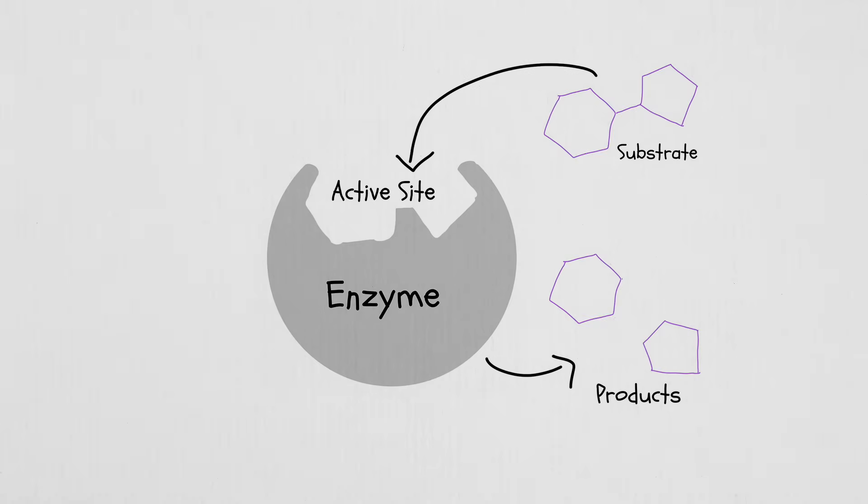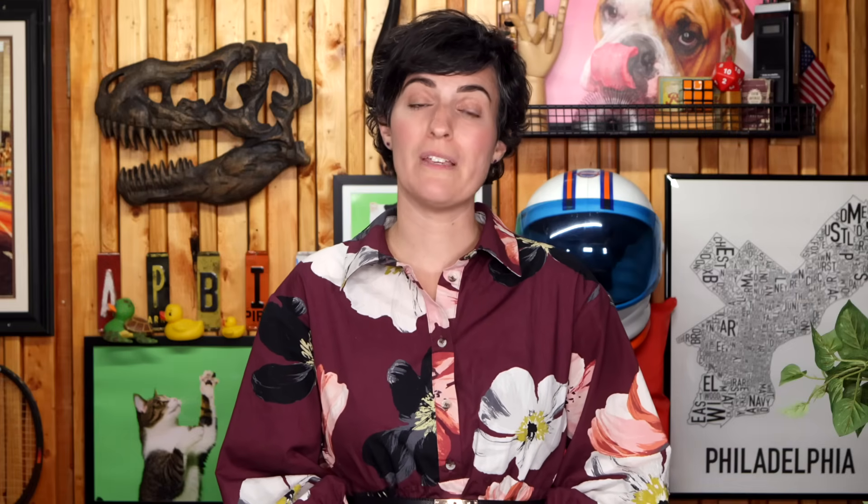And then there are inhibitors. Competitive inhibitors block the active site, so the real substrate can't bind. Non-competitive inhibitors, on the other hand, bind somewhere else on the enzyme, changing its shape so it doesn't work properly. The bottom line: enzymes are powerful, but picky. They need the right shape and the right environment to help cells do their work efficiently.